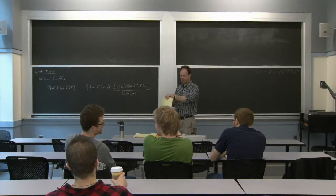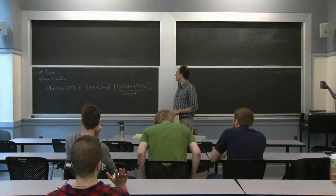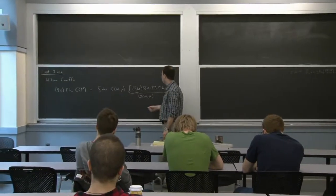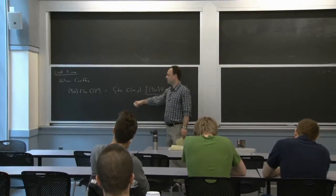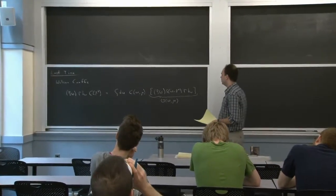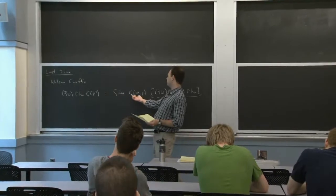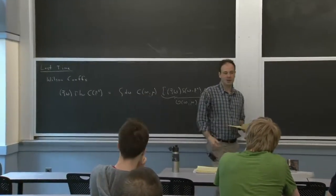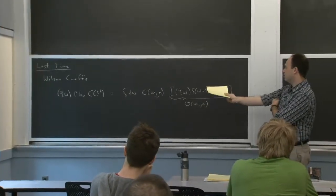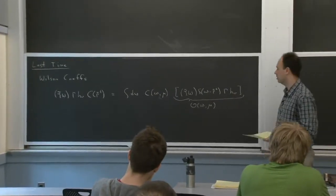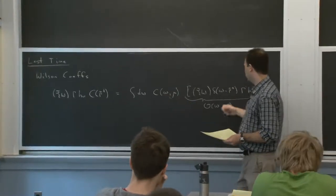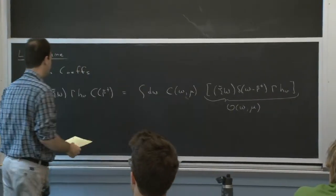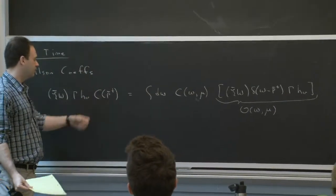Let's get started. Last time we talked about factorization in the effective theory. There was one type of factorization — hard-collinear factorization — that happened when the Wilson coefficient, which is a factorization between the low energy physics described by the operator and the Wilson coefficients.